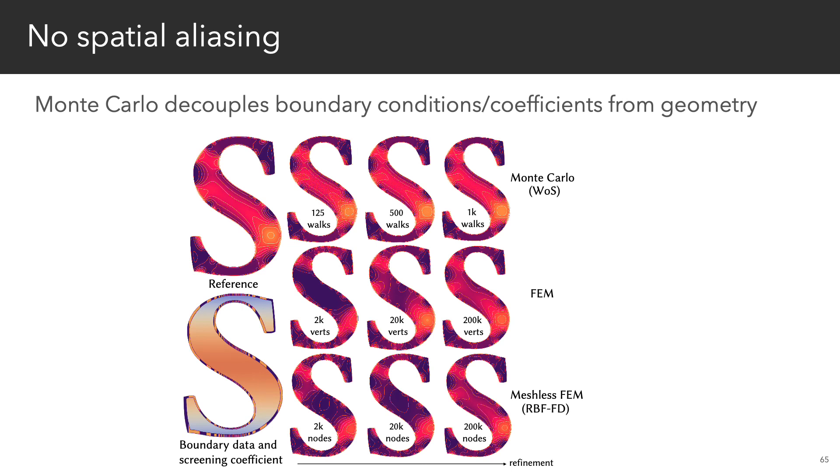An extra benefit of Monte Carlo is that it decouples the boundary conditions and coefficients from the geometry. As a result, there's never any spatial aliasing in the solution, and walk-on spheres is able to capture the global profile of the solution with just a few walks.